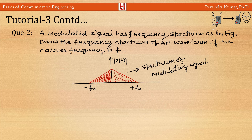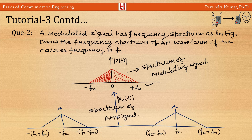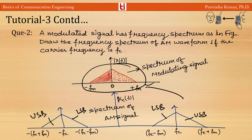Question 2: A modulated signal has a frequency spectrum as shown in the figure. Draw the frequency spectrum of the AM wave if the carrier frequency is fc. When modulating with frequency fc, the spectrum is shifted to the left and right, forming two sidebands centered at fc and −fc. So the AM signal has upper and lower sidebands centered at fc and −fc, with the spectrum of the modulating signal given.